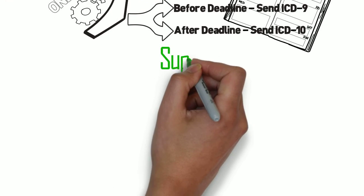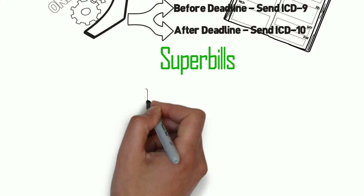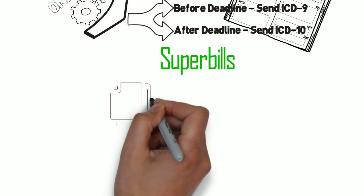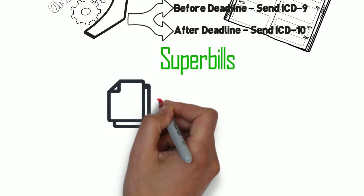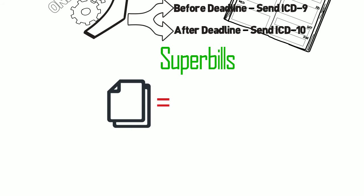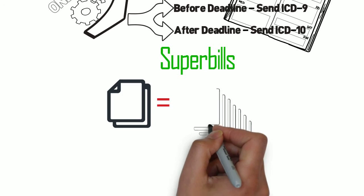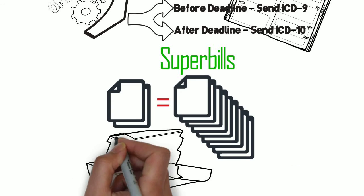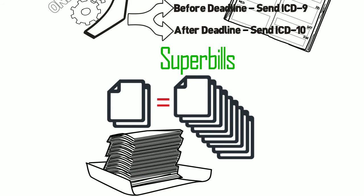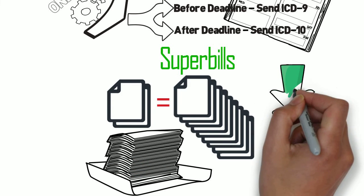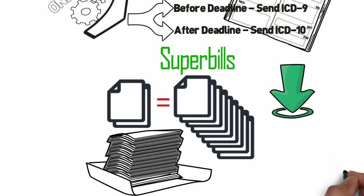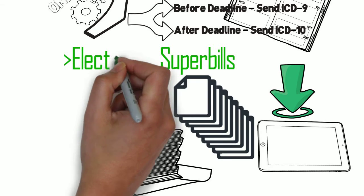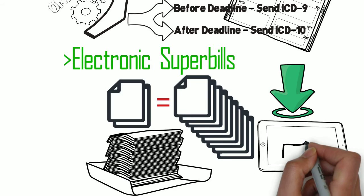And let's not forget the challenge of paper super bills. With the massive expansion of codes, practices will no longer have a one or two page super bill. Instead they're looking at six to even nine pages, and realistically there is no way any practice can efficiently handle a nine page super bill. Luckily, LIHTC users can download the new mobile app on their iPad and use an electronic super bill to solve that challenge.